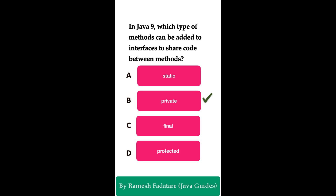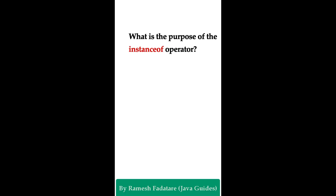Starting from Java 9, interfaces can have private methods, which can help in sharing code between methods without exposing them to external classes. As we know, from Java 8 onwards we can define static and default methods in an interface, and from Java 9 onwards we can also define private methods in an interface. Private methods are useful because we can keep the common code in a private method and call those private methods from the default methods within the interface.